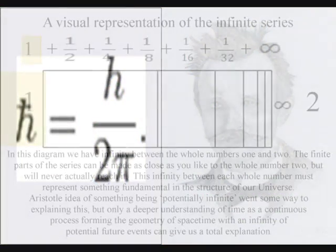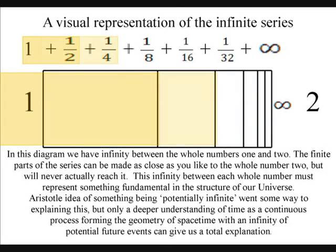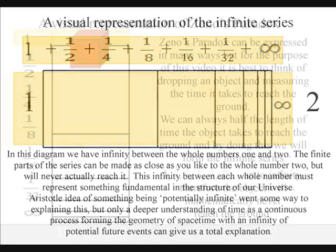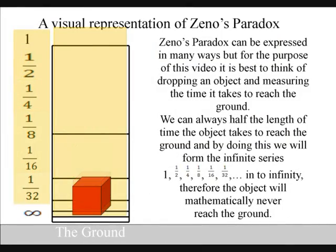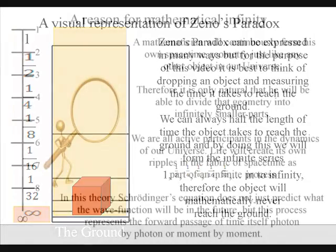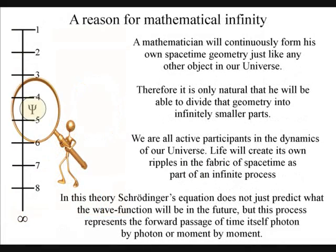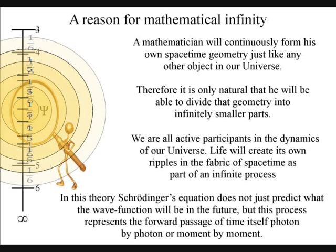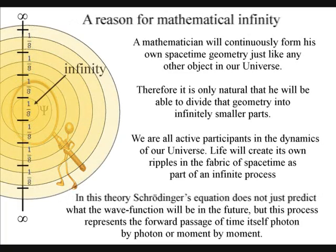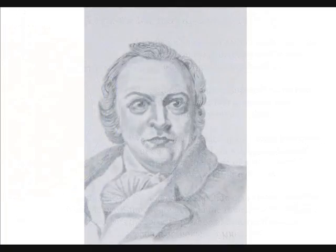In this theory, the Planck constant is a constant of action and is continuously coming into existence photon by photon, or moment by moment. This is part of a continuous process of change or creation — therefore we have a true infinity that can continuously be halved or divided over a period of time. A mathematician will be able to divide any number into infinitely smaller parts because of this process. For a poet or artist, this process continuously forms a blank canvas that they can interact with, forming the possible into the actual as time unfolds.